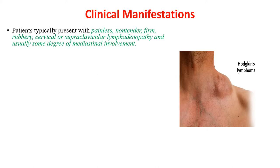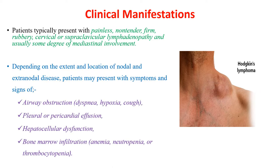Regarding clinical manifestations, patients typically present with painless, non-tender, firm, rubbery cervical or supraclavicular lymphadenopathy and usually some degree of mediastinal involvement. Depending on the extent and location of nodal and extranodal disease, patients may present with symptoms and signs of airway obstruction, pleural or pericardial effusion, hepatocellular dysfunction, and bone marrow infiltration.